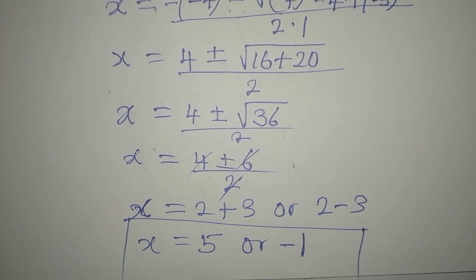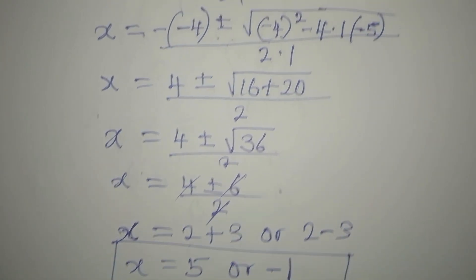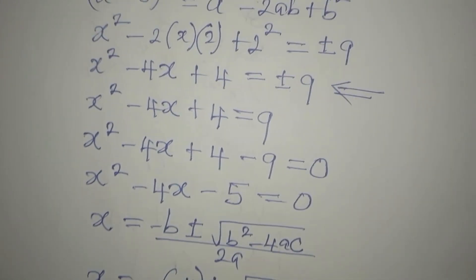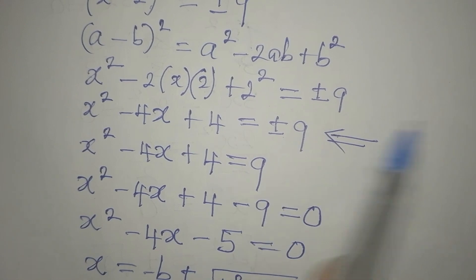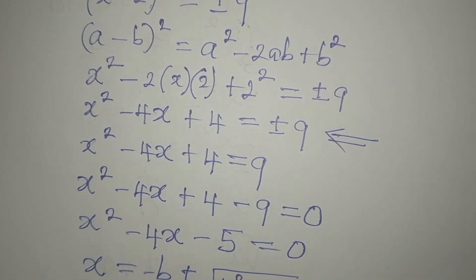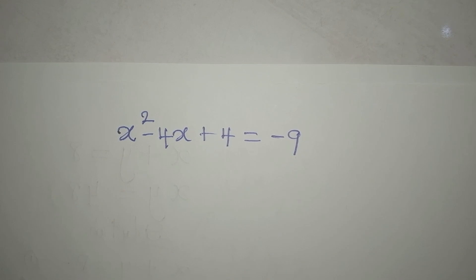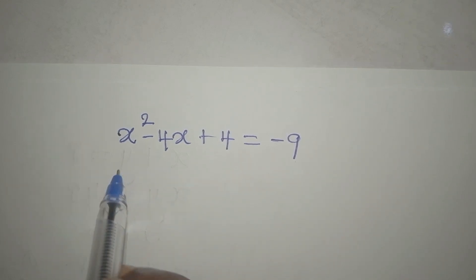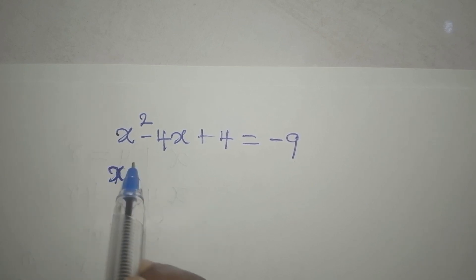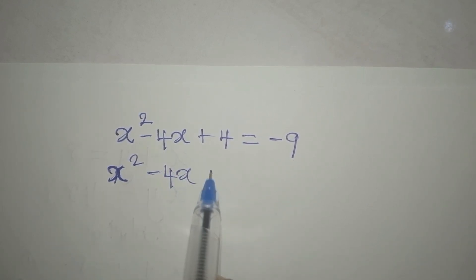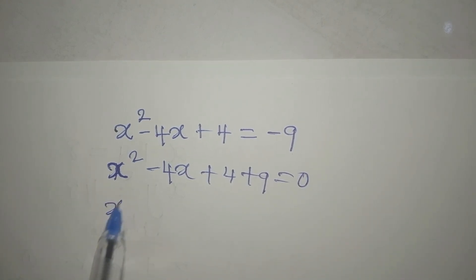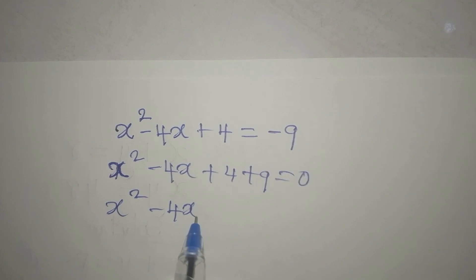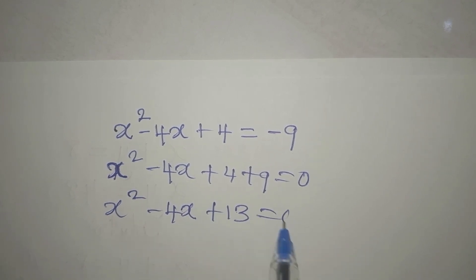Let's continue from the equation we left out — now we take the negative 9 case. We'll have x squared minus 4x plus 4 plus 9 equals 0, which gives us x squared minus 4x plus 13 equals 0.